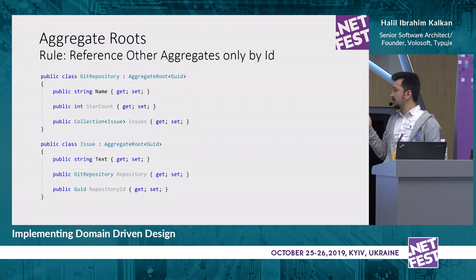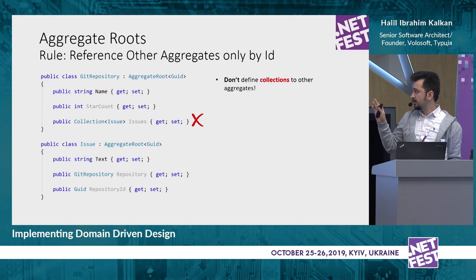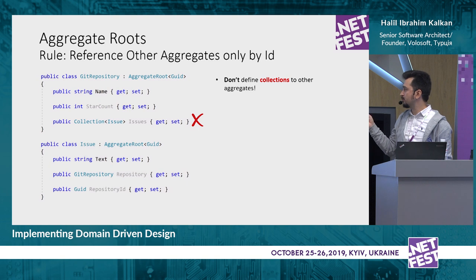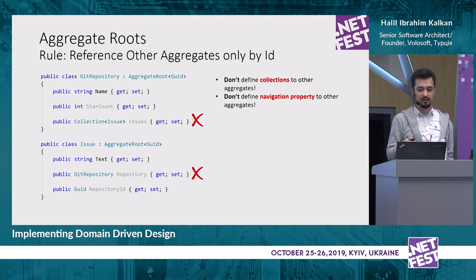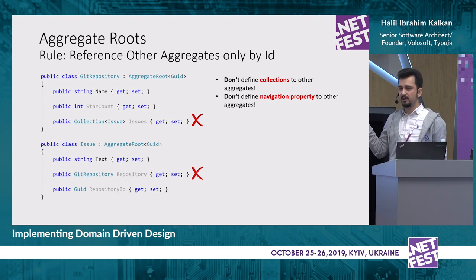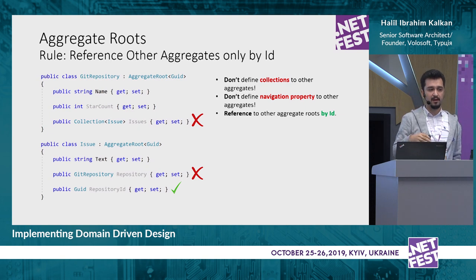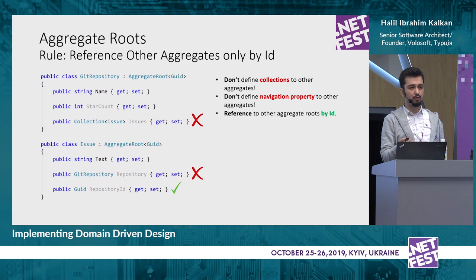The first explicit rule: reference other aggregates only by ID. In the sample, a repository aggregate and an issue aggregate — the repository should not have a collection of issues because that would be a collection of another aggregate root type. Also, an issue cannot have a repository navigation property. This pattern is familiar to Entity Framework developers but is not suitable for DDD or NoSQL databases. Whenever we need to reference an object outside our aggregate, we use ID, and query the other aggregate separately.